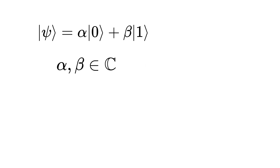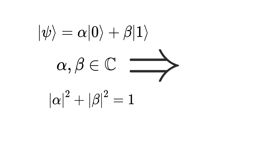Alpha and beta belong to the complex numbers, and the magnitude of alpha squared plus the magnitude of beta squared equals 1. We can represent alpha in polar coordinates as r1 times e to the i*phi1, where r1 is the magnitude of alpha.